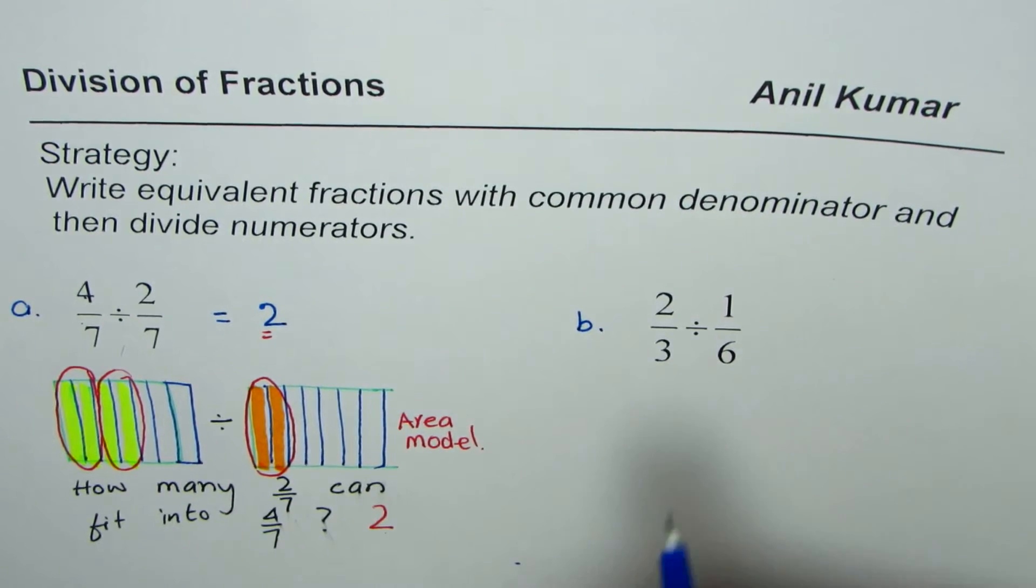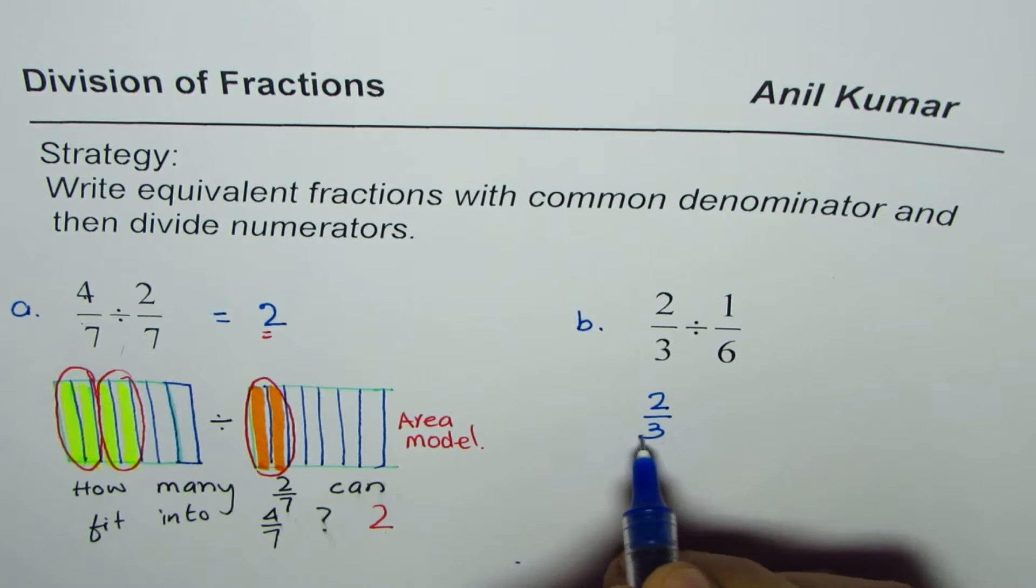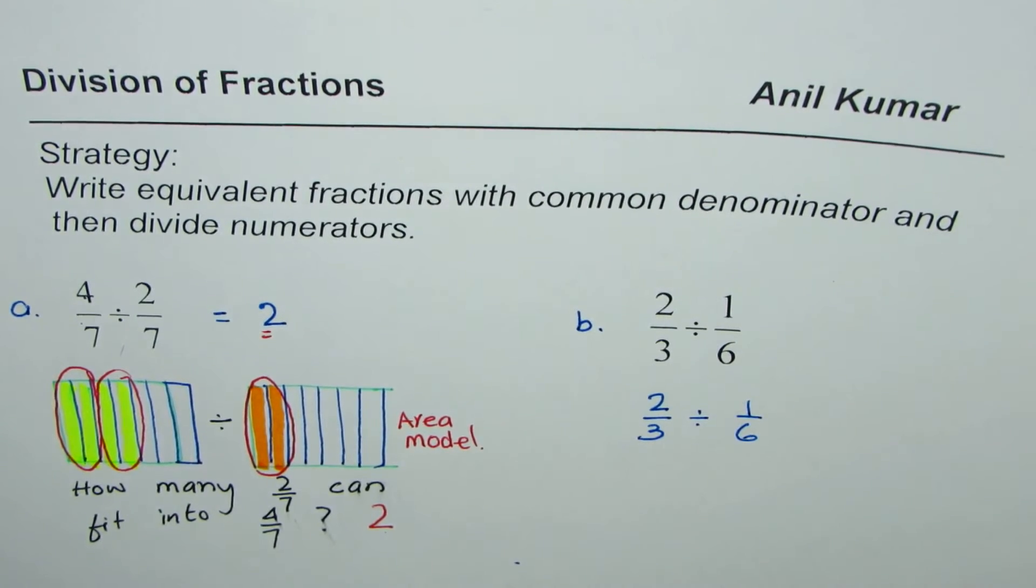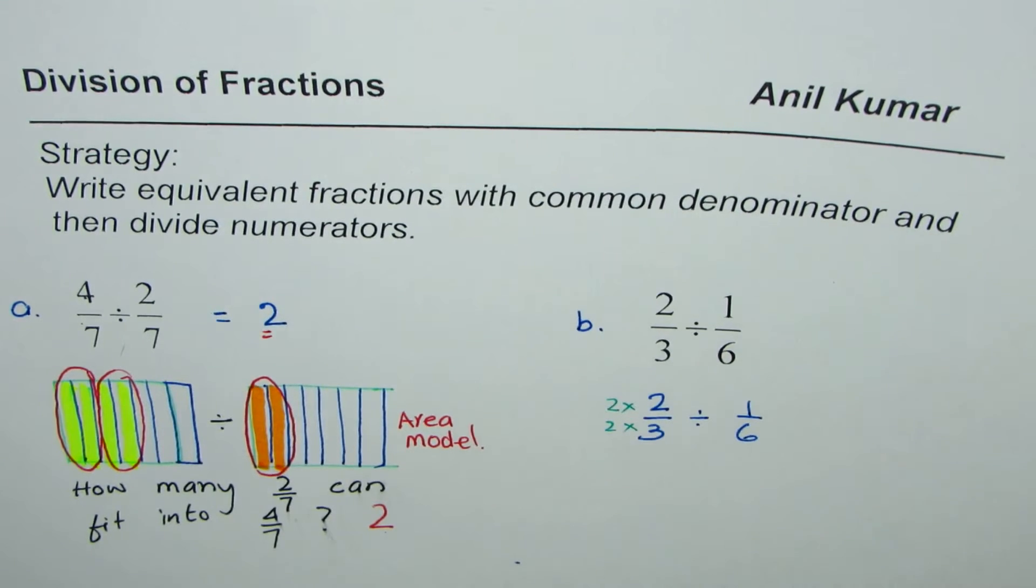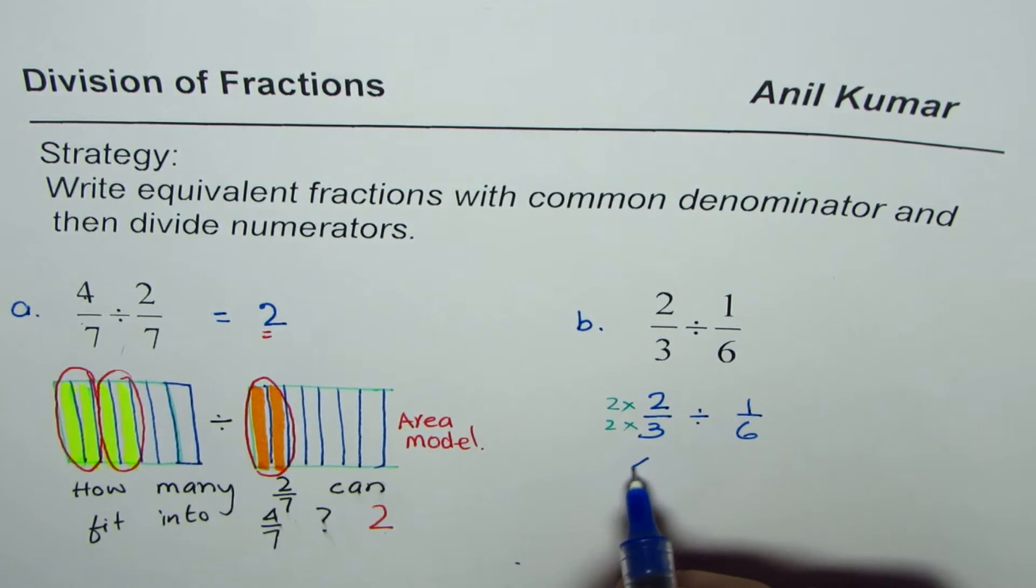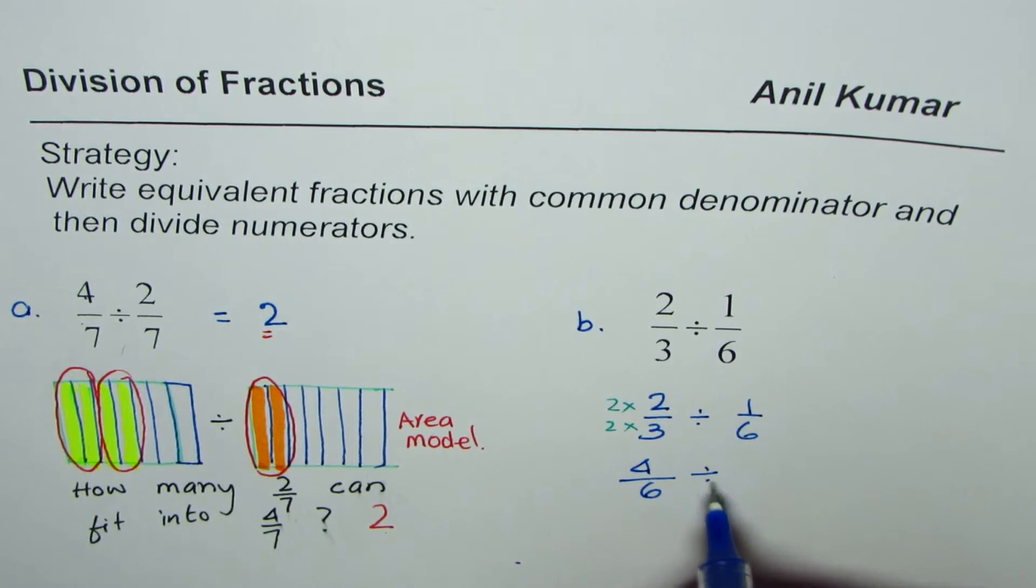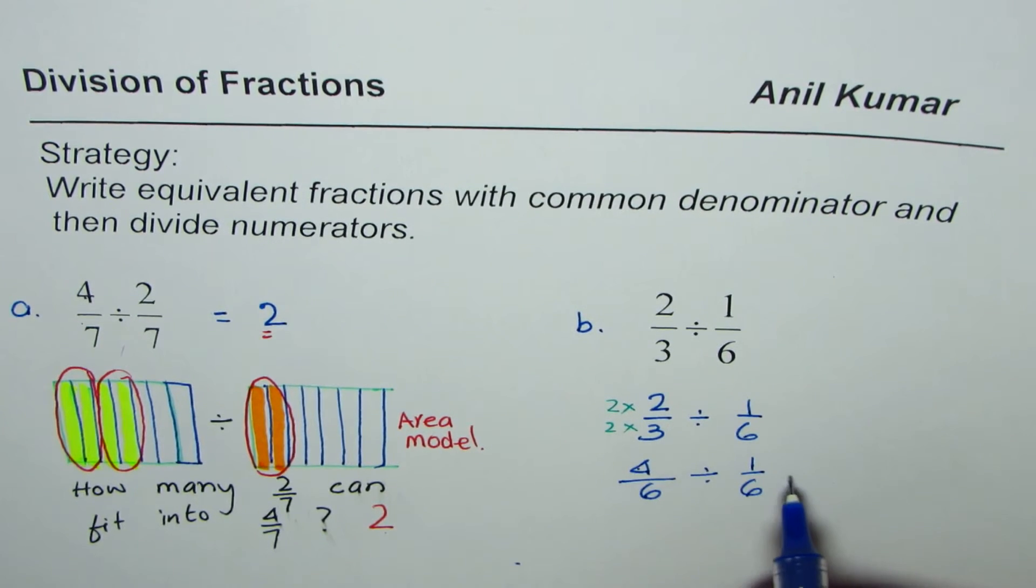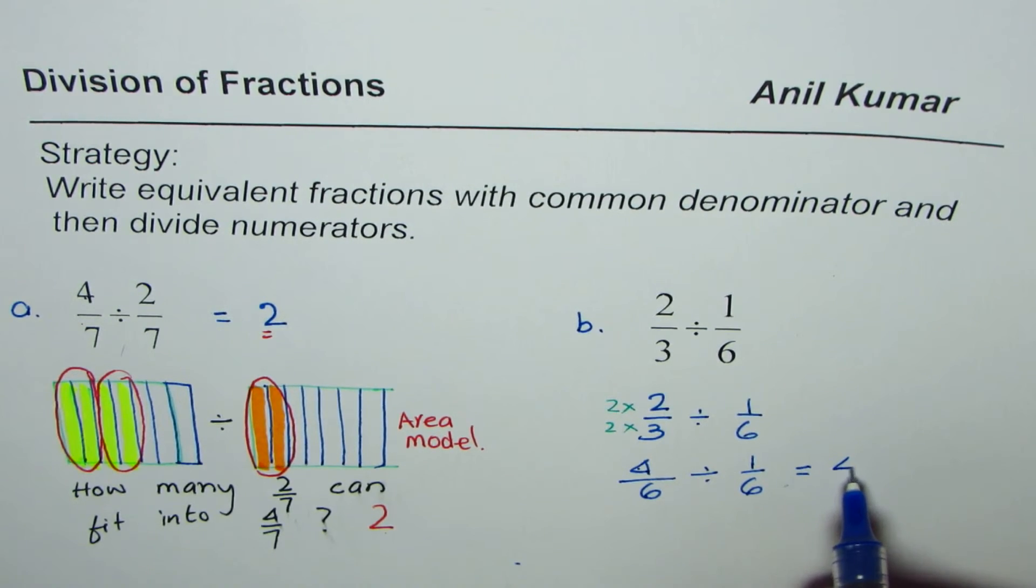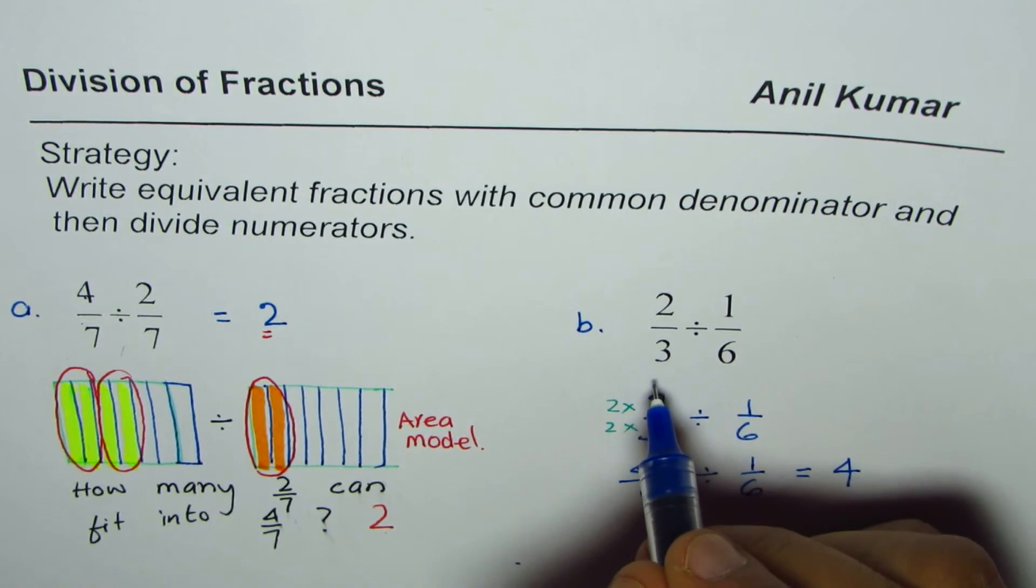So what we can do is we can multiply 2 over 3 by 2, both numerator and denominator. So we get 4 over 6 divided by 1 over 6 - equivalent fraction with common denominator. Now the result is same as division of numerators: 4 divided by 1. So the answer is 4. Therefore 2 over 3 divided by 1 over 6 is equal to 4.